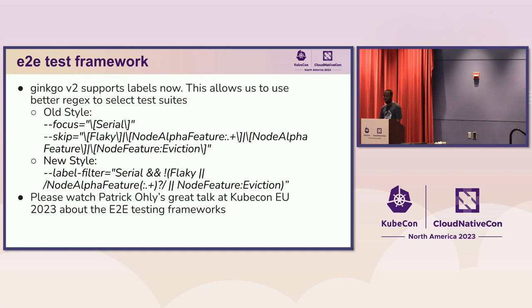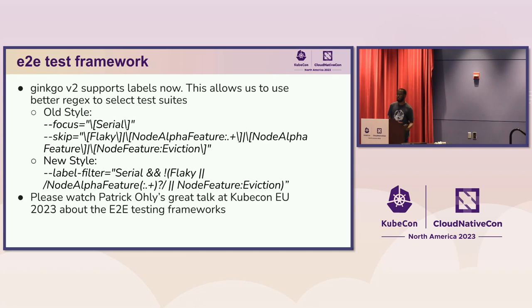The E2E test framework: last KubeCon in Amsterdam, one of the tech leads, Patrick, gave a great presentation about the E2E test framework — how it works and how to write good tests. I recommend you watch that. But since then, he's introduced a new feature which allows us to use labels. In the past, if you wanted to run an E2E test, you had to specify two flags — focus and skip — to tell the framework what tests to run, which was a bit complicated and limited your selections. The new style allows better control over the test suite that we run.